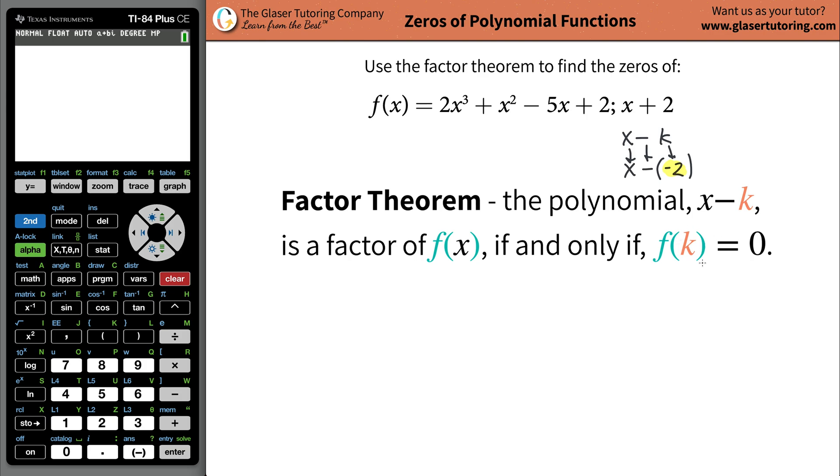Now, what the second part of this factor theorem states is it states now that if you plug in this value of k into your original function, which is this in the problem, and when you evaluate it, it's zero, then you know that this thing is a factor. So remember that this kind of idea that if you plug in f of k is equal to zero, that's also known as the remainder theorem. You can find the remainder by plugging in f of k. And whatever this is will be the remainder. And if you have a remainder of zero, that means that this is a factor.